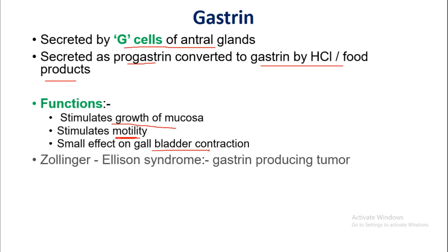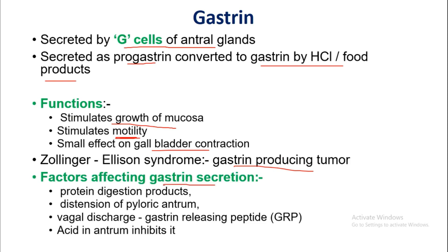These are the functions of gastrin. Zollinger-Ellison syndrome is a gastrin-producing tumor — in that condition there will be a high level of gastrin in the blood. Factors affecting gastrin secretion include: protein digestion products, distension of the pyloric antrum, vagal discharge or gastrin-releasing peptide (GRP), and acid in the antrum, which inhibits gastric secretion.